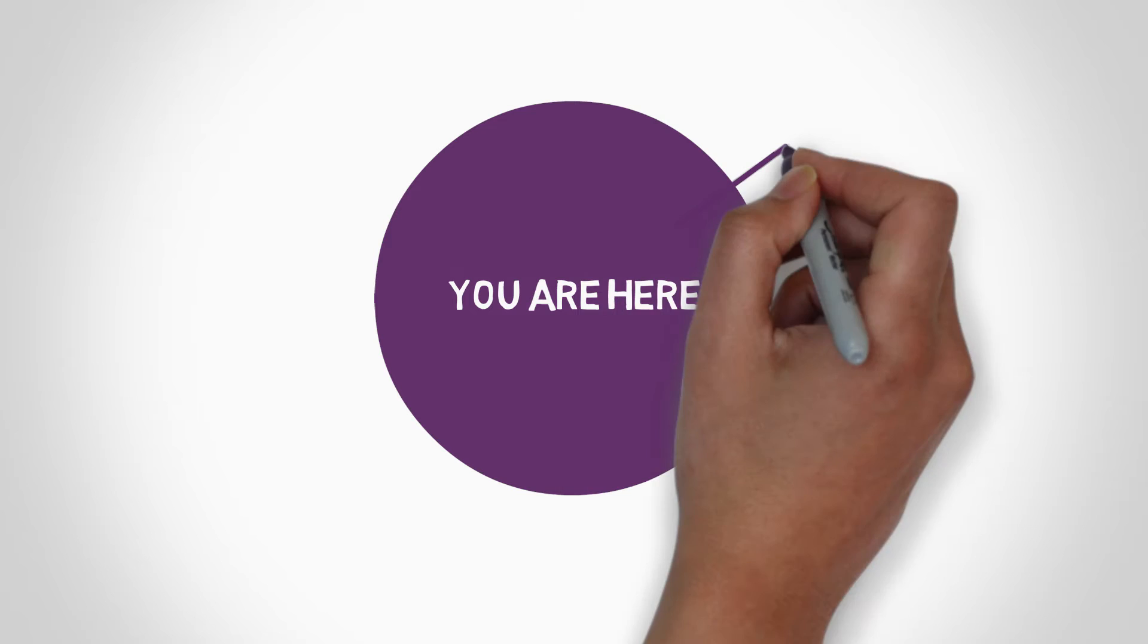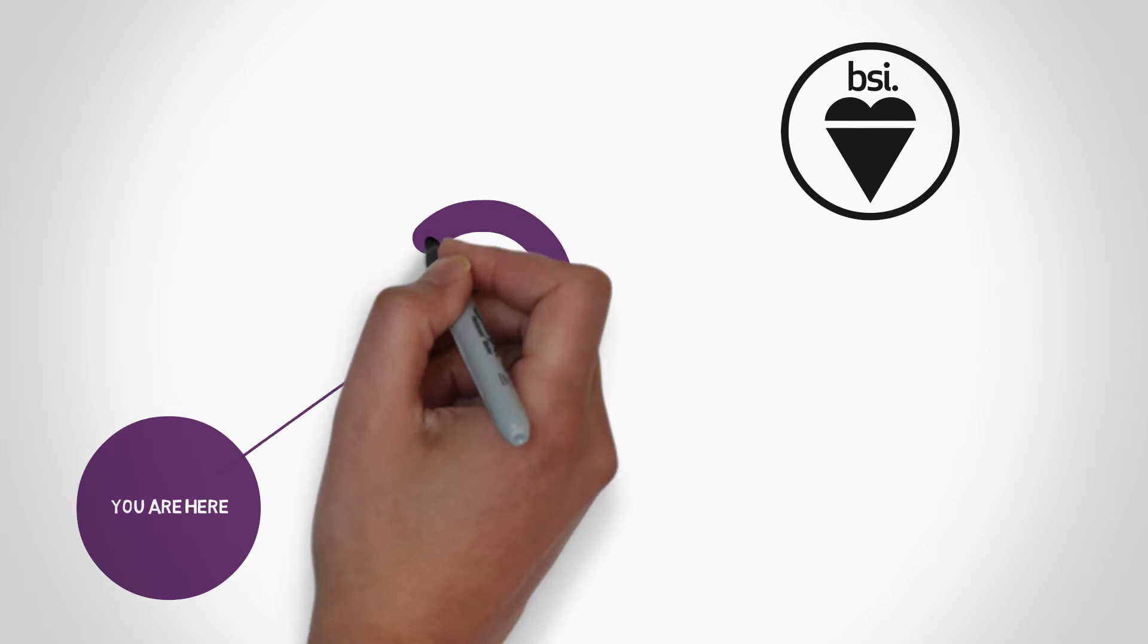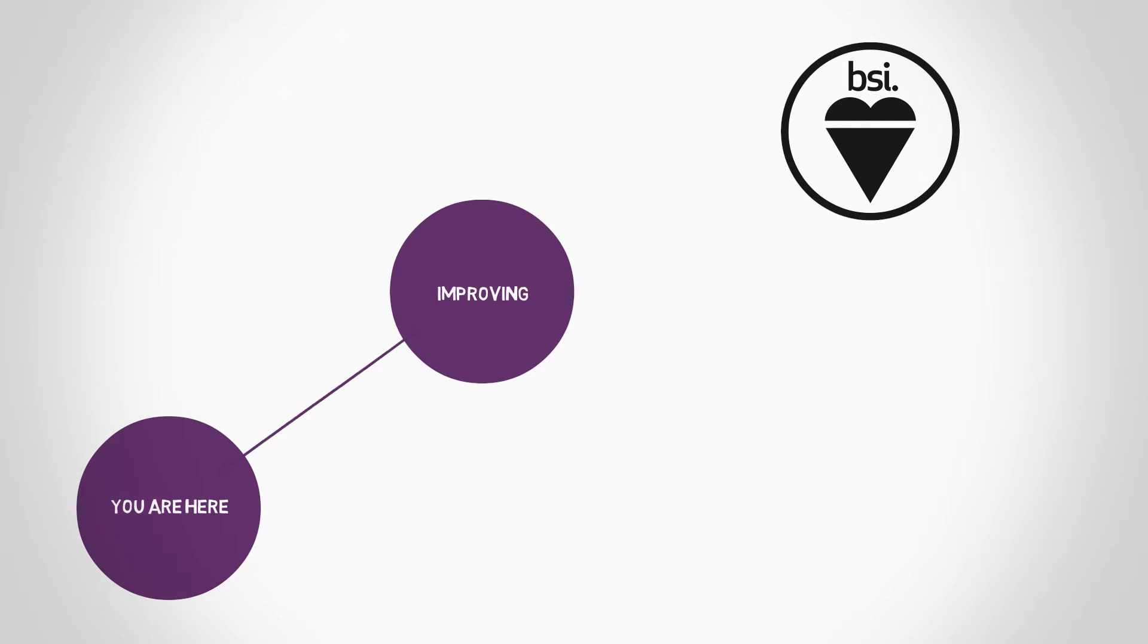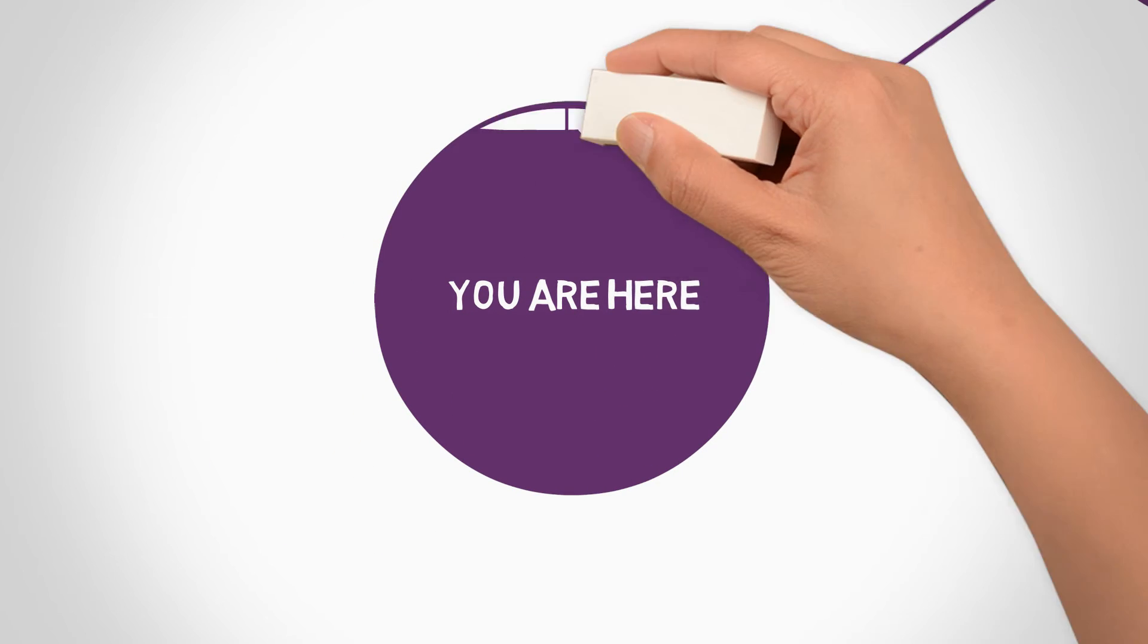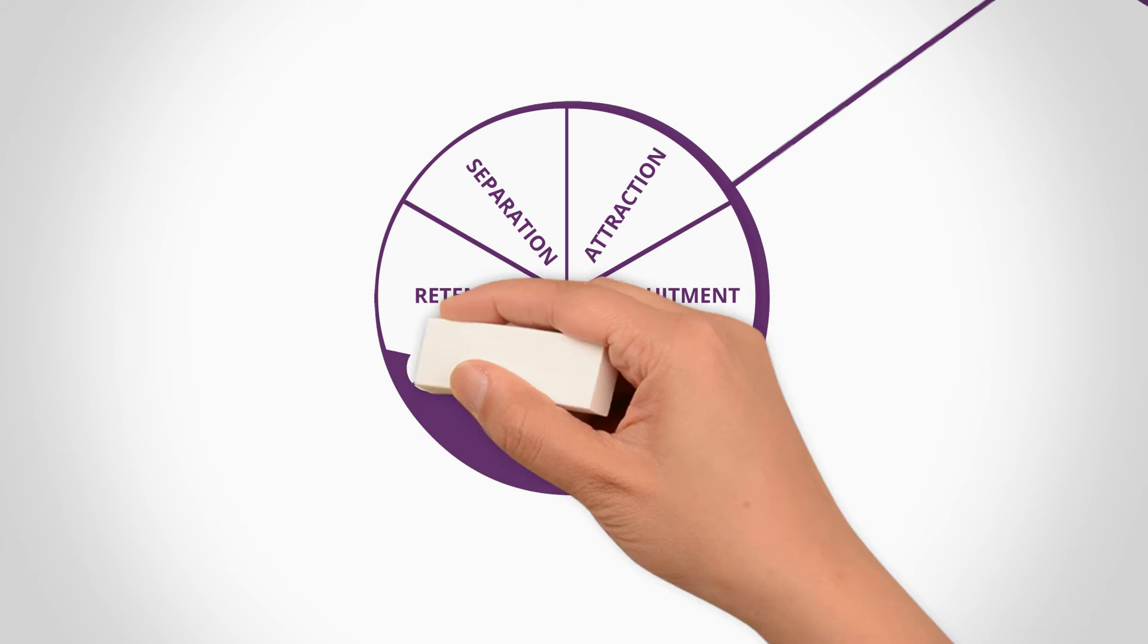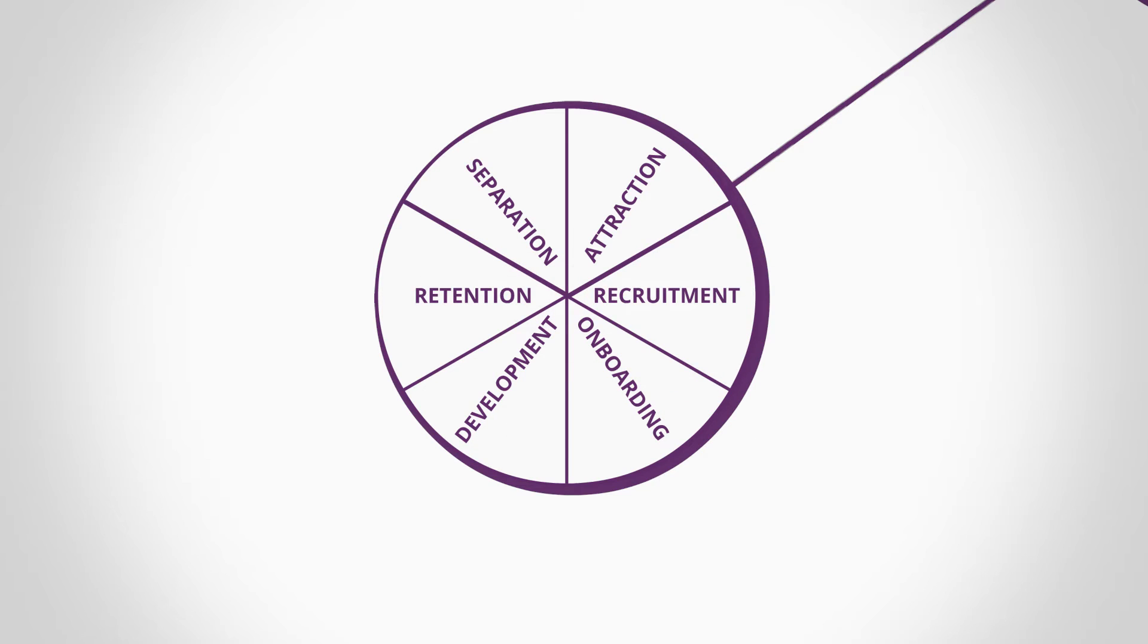The first step is to get a clear idea of where you're starting from. We can help you understand this and identify things you can be doing from day one that will improve employee engagement and move you towards achieving the standard. We can also help you develop a plan to address any gaps and start planning for a full assessment against the standard, if that's what you're after.